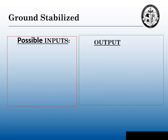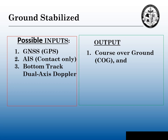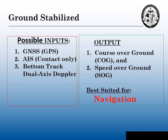Ground stabilized inputs and outputs. An input you can have for ground stabilization would be a Global Navigation Satellite System, or GPS. Another input is Automatic Identification System — AIS — which, since it comes from a GPS, means the contact will be ground stabilized. You can also bottom-track a dual axis Doppler. The output from these will give you course over ground and speed over ground. Although AIS will give you the heading of the vessel, it will not give you the true course of the contact. This is best used for navigation.